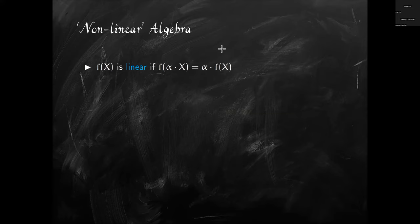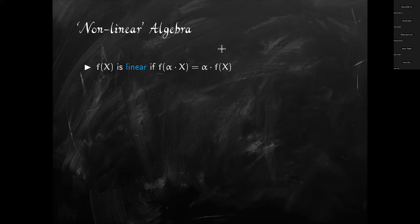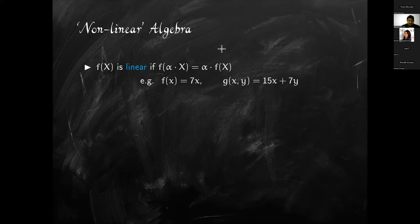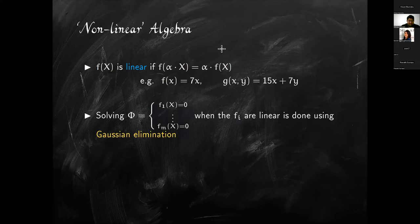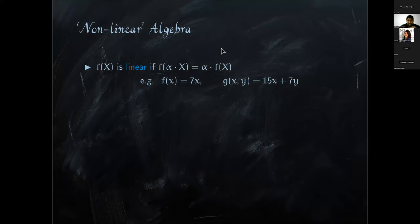Let me clarify what I mean by non-linear. You've done PCA and singular value decomposition, which fall under linear algebra. A function f is linear if f(αx) = α·f(x), where α is a constant — meaning if you want to evaluate f(αx), you can just compute f(x) and multiply by α. Examples of linear functions include f(x) = 7x and g(x, y) = 15x + 7y.